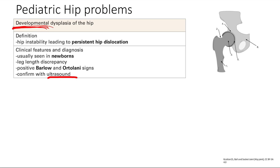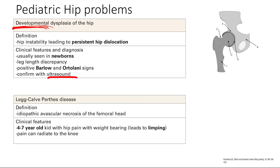Next is Legg-Calvé-Perthes disease. This is idiopathic avascular necrosis of the femoral head — it doesn't get blood and it dies, and we don't know why. This is often seen in a four to seven-year-old with hip pain with weight-bearing, so it leads to limping. The pain can radiate to the knee. A four to seven-year-old kid limping in pain — it's probably Legg-Calvé-Perthes.